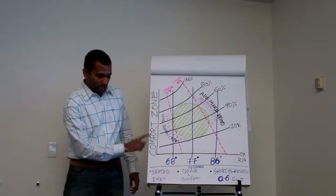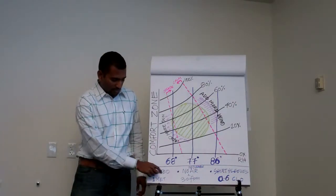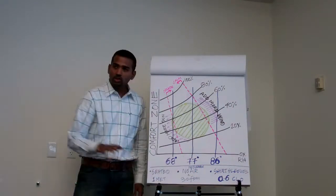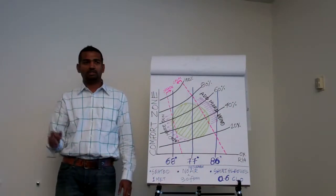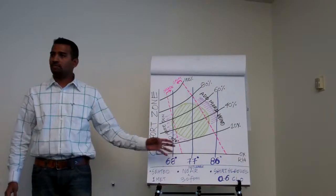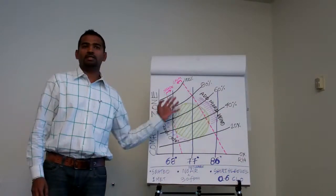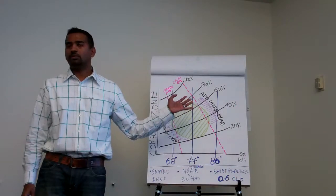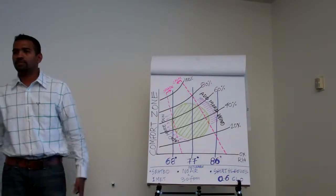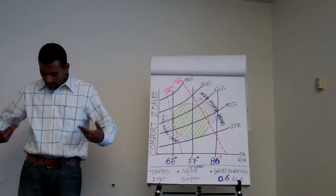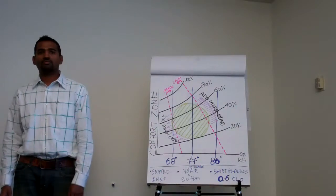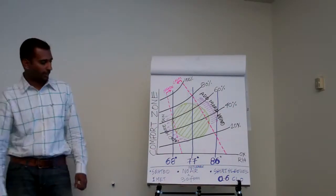The conditions assumed for this chart are: seated condition — that is 1 MET. No noticeable air movement — that is 30 feet per minute. And lastly, short sleeves — that is what is assumed, at 0.6 CLO. CLO is the factor for clothing. Normally this is 0.6 CLO; if I had a jacket, that's 1 CLO. It keeps adding.